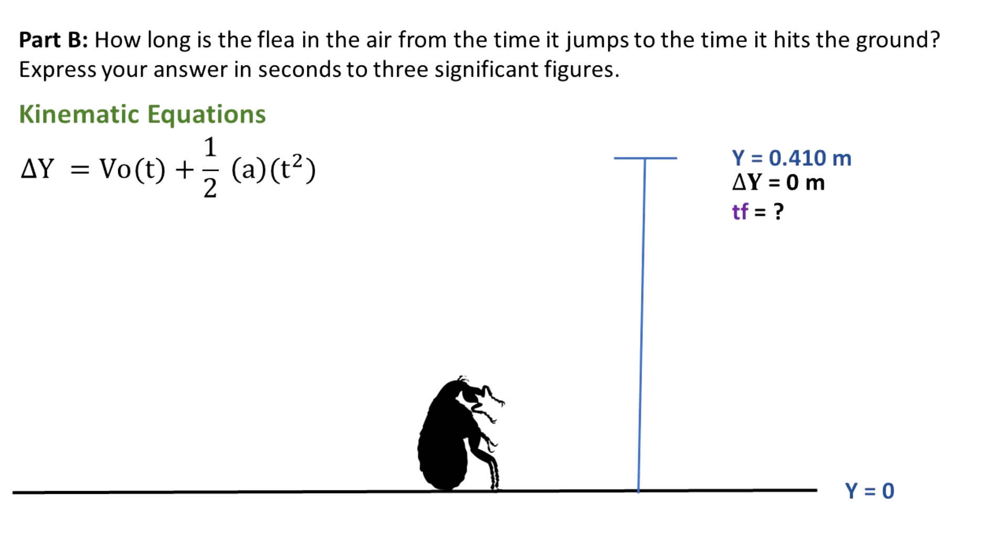From the kinematic equations, I selected one that had delta y, that's the displacement of the flea. We know the initial velocity, and for this case, we know that acceleration is gravity. So the only unknown that we have for this equation is the time of flight. That's why I selected this equation, and we're going to solve for the time.